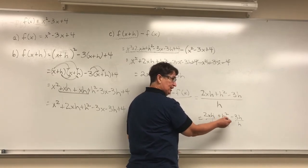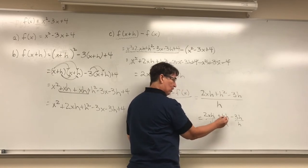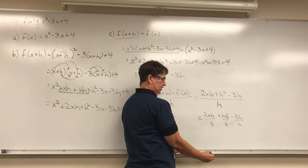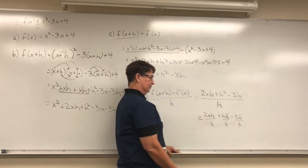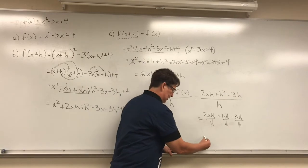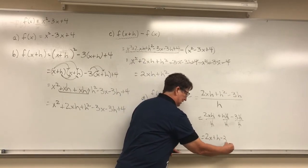You know, I could rewrite that as h times h. Well, one of those h's divided by that h again is 1. And then this h divided by that h is 1. So I'm left with 2x plus h minus 3.